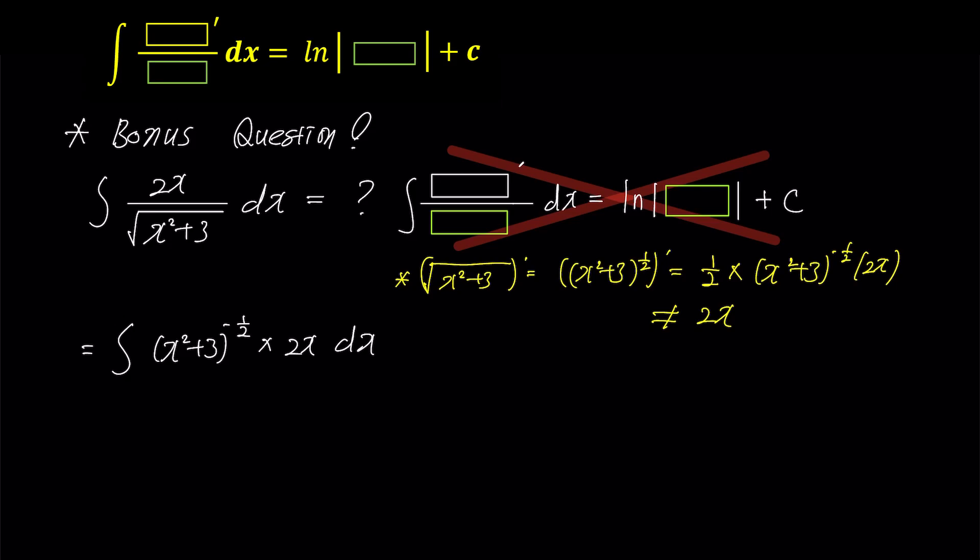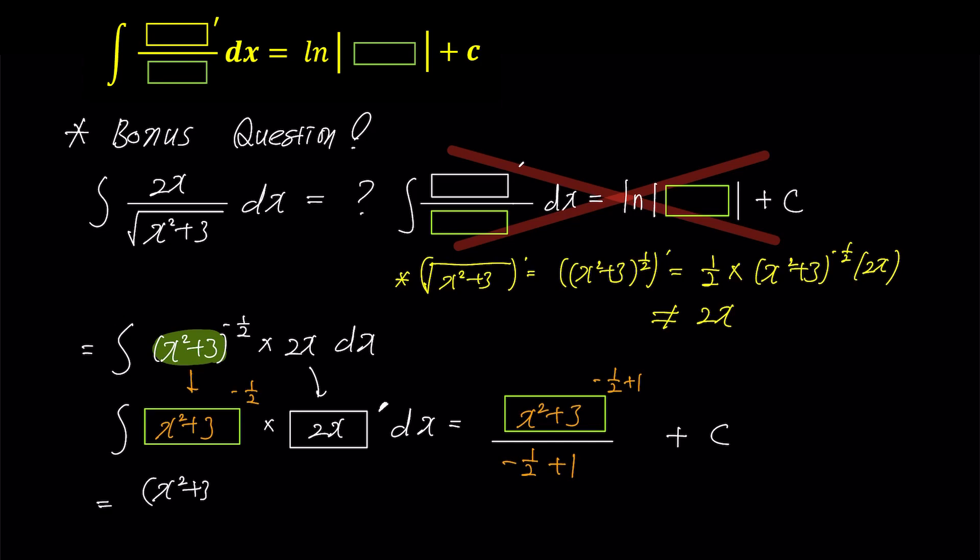If you don't know much about the basic box rule or want to know more, please click the link in the upper right corner. Now let's fill in the boxes. Put x squared plus 3 in the green box, make the exponent negative half, and put 2x in the box prime. Then put the same term x squared plus 3 in the right green box and add 1 to the exponent to make it negative half plus 1, and divide the same way. The answer is x squared plus 3 to the power of half over half. To simplify it, multiply by 2 both top and bottom to get the answer of 2 times x squared plus 3 to the power of half plus c.